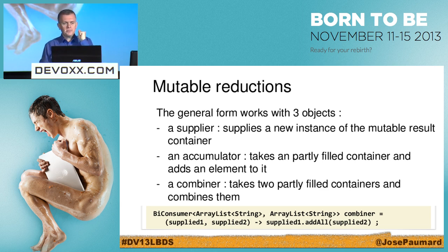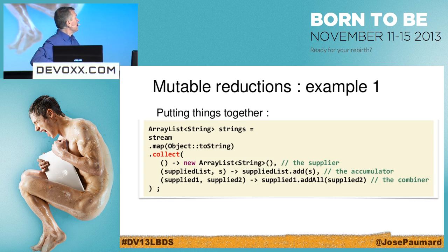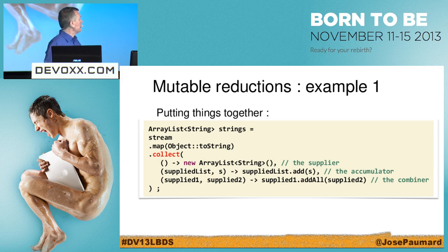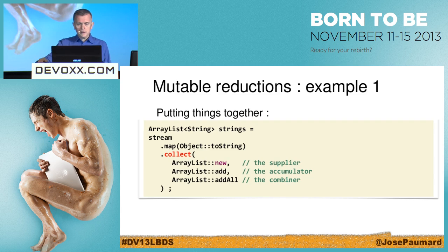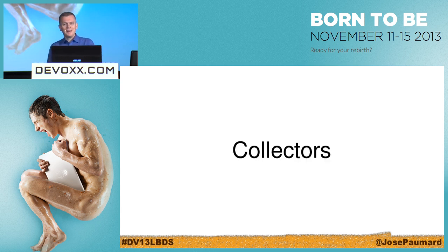To write mutable reduction: I call the collect() method. The first parameter is the Supplier — to build the new list. The second is the accumulator — to add incoming elements to the list. Third is the combiner — to merge two lists. This is not very easy to read in the three-argument form; it's a bit cluttered. But I can write it more cleanly using method references and a cleaner lambda syntax — much clearer. I love it.